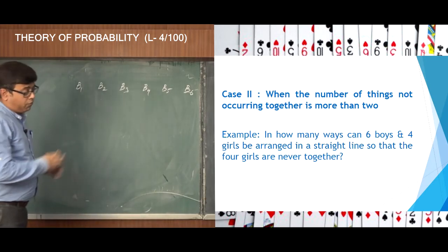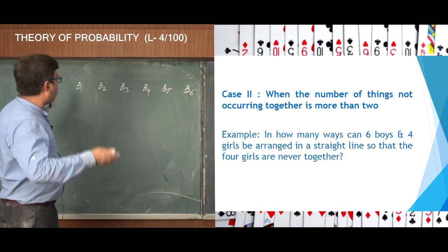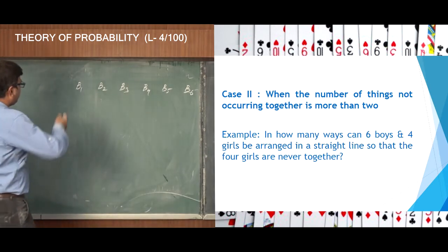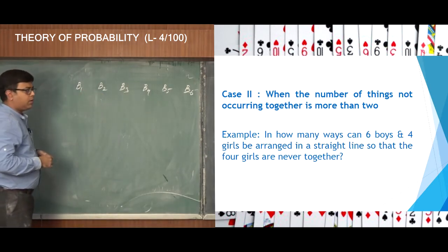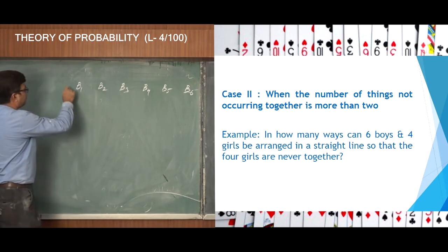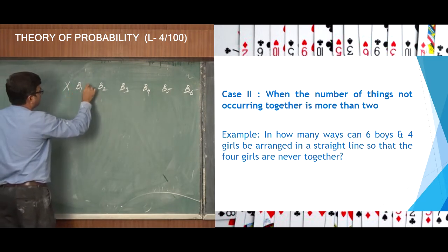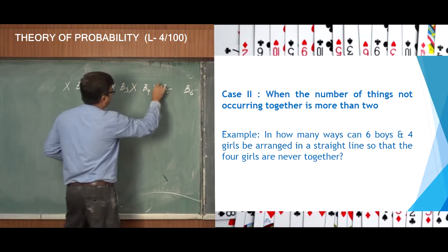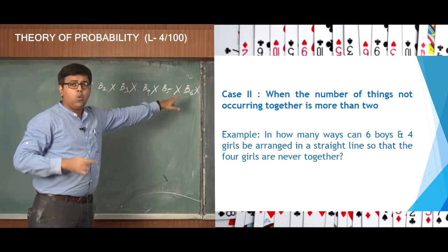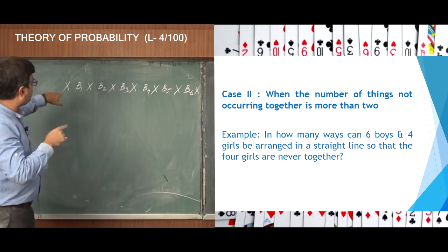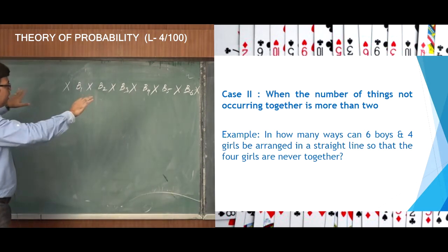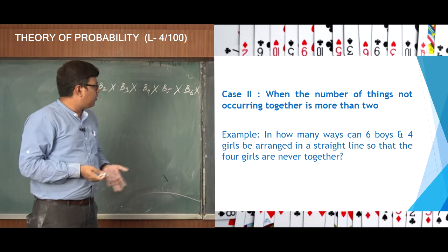Now, the four girls are never together, so we make an alternate arrangement — the only possible way to satisfy this condition. The girls will sit in between the boys. How many positions are there? Counting: one, two, three, four, five, six, and seven. So there are seven places where the four girls can sit, and if they sit in any of those seven positions, they will never be together.